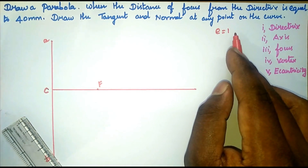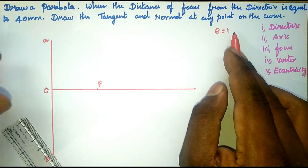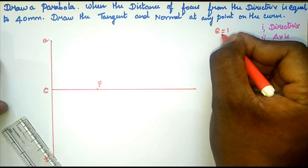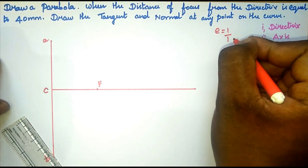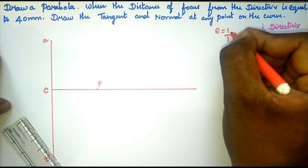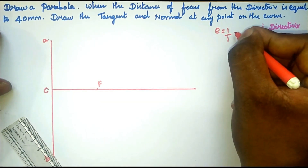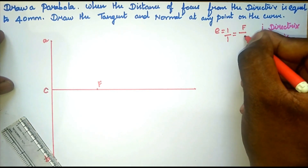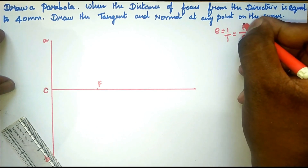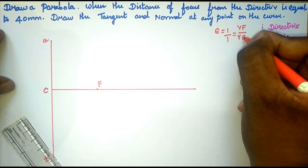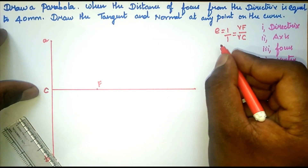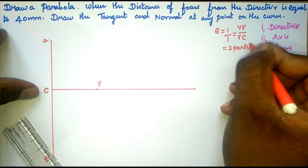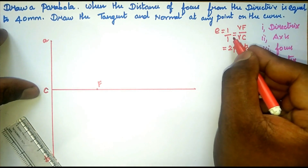Eccentricity is defined as the ratio of the distance of a point from the focus divided by the perpendicular distance from the directrix. For a parabola, this ratio equals 1 — that is, 1 divided by 1. So the numerator value and denominator value are added as equal parts. We take the eccentricity value of 1 and split it into 2 equal parts in the segment CF.